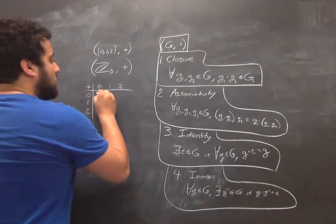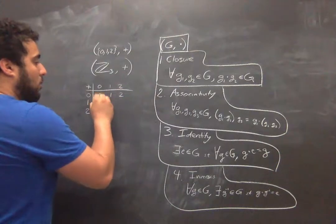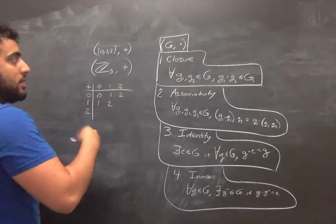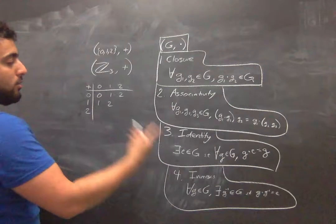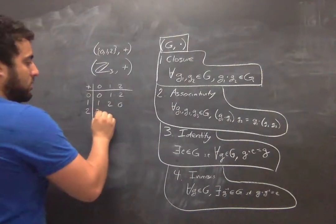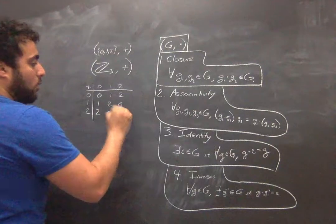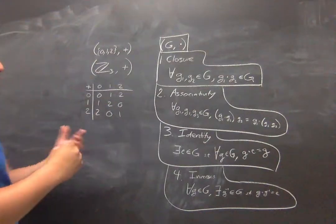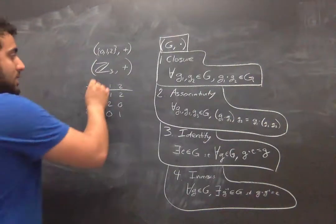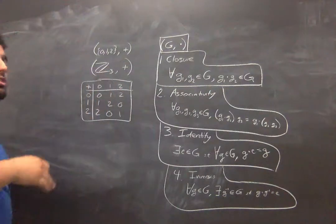We can fill out this Cayley table: zero plus zero is zero, zero plus one is one, zero plus two is two, one plus zero is one, one plus one is two, one plus two is three which in mod 3 moves back to zero, two plus zero is two, two plus one is zero, two plus two is four which moves back to one. So this is the Cayley table for the group of integers mod 3.